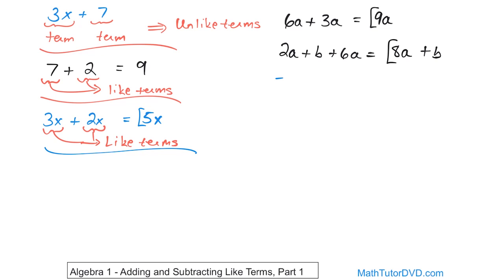What if you have negative a plus 10a? Don't let the negative sign scare you — there's a variable a here and a variable a here, so these are like terms. Really, this is negative 1 in front of the a, and the other term is 10. So you have negative 1 plus 10. Adding those gives you 9, because you subtract them and the sign goes with the larger absolute value, which is positive. So the answer is 9a.